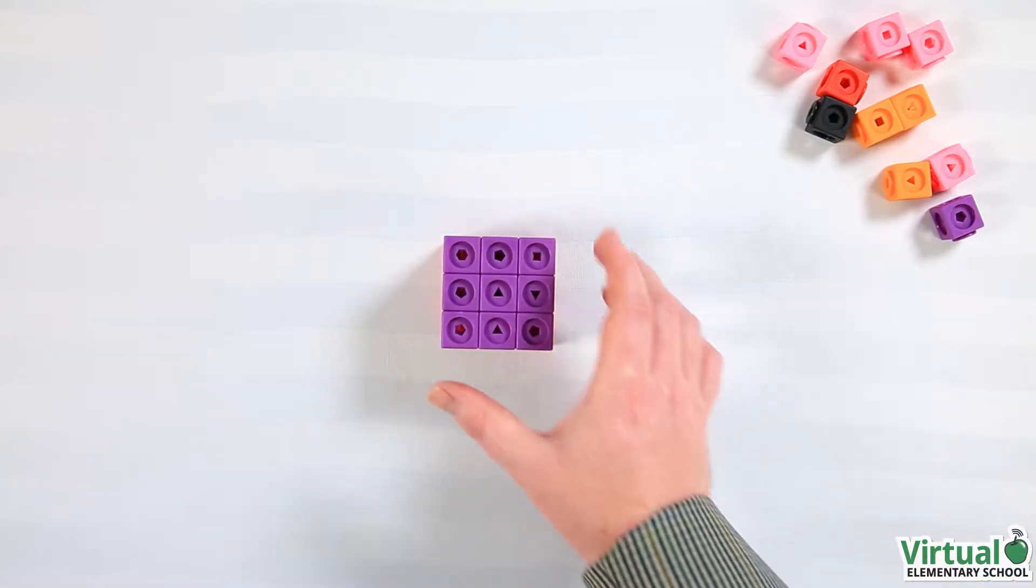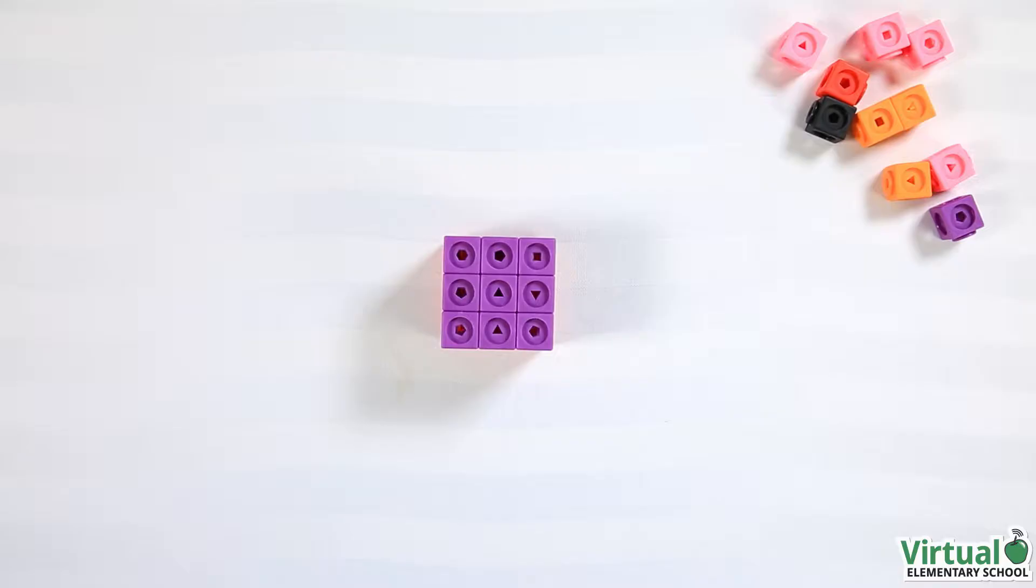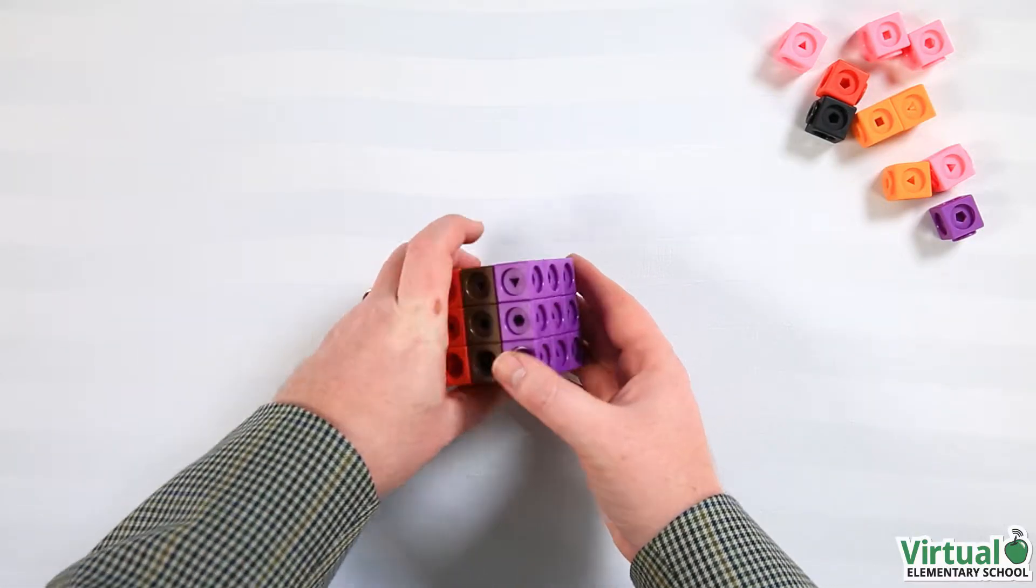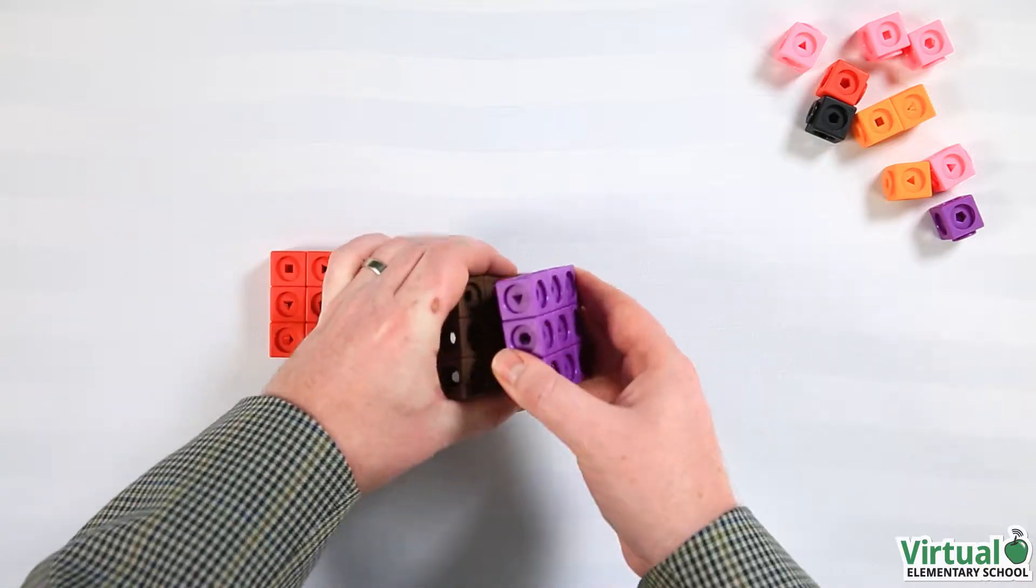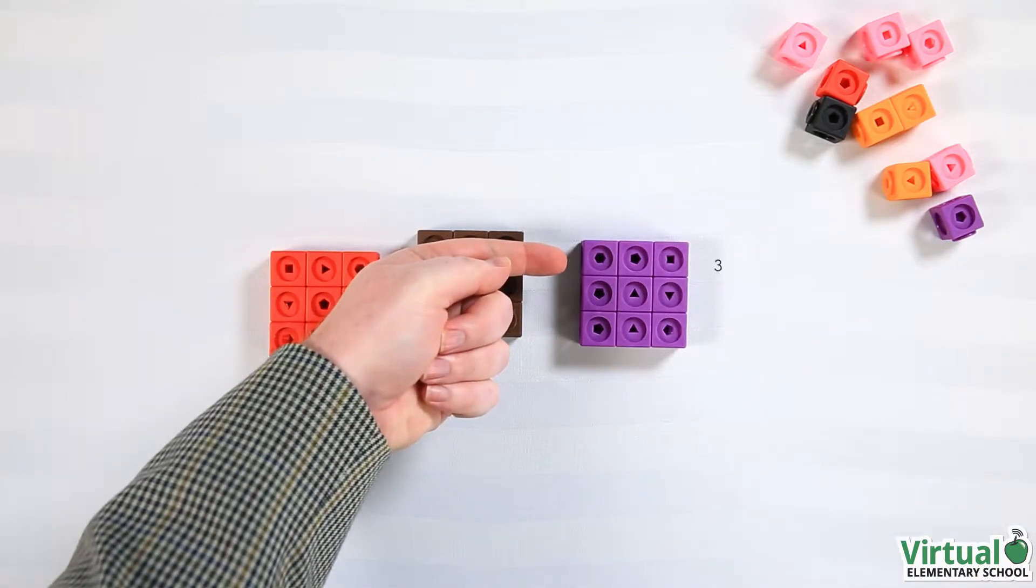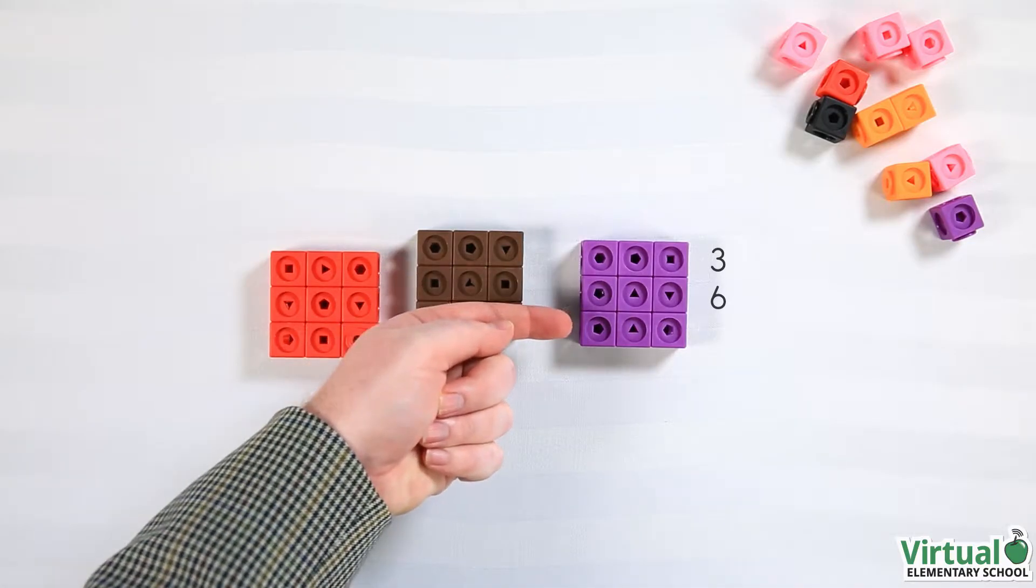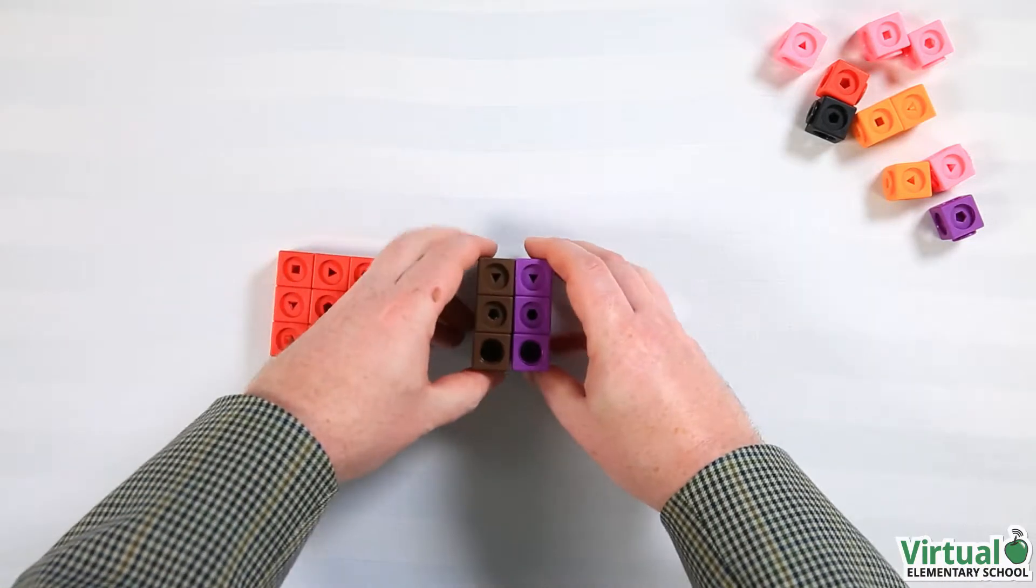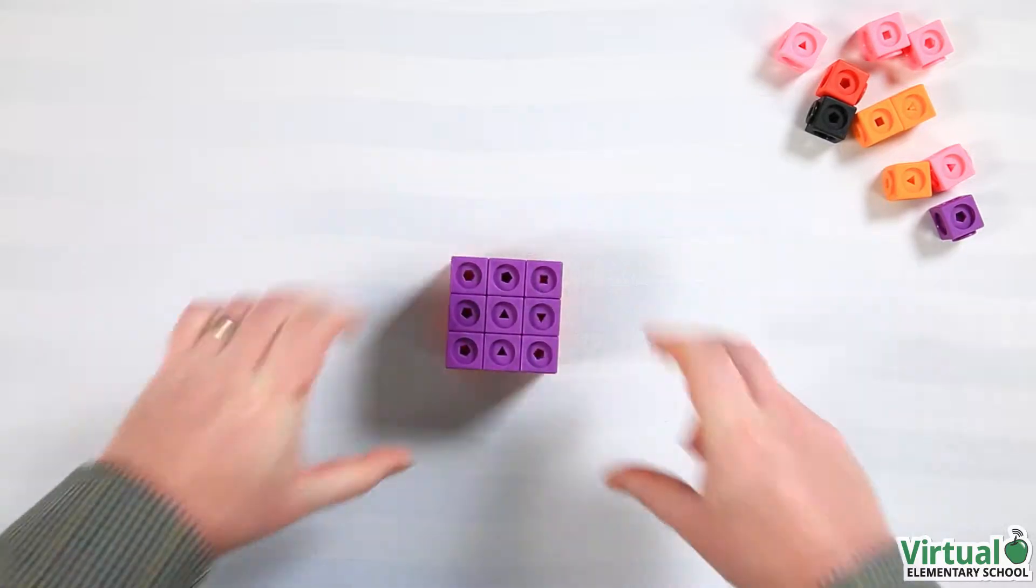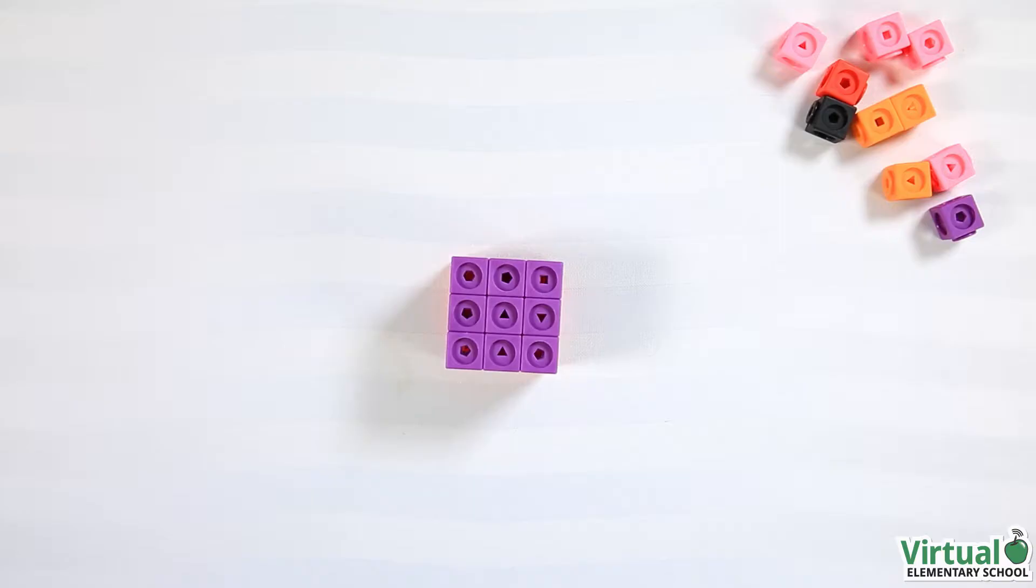Let's measure the volume of this large cube. Notice that it has three layers of connecting cubes. The top layer has three, six, nine cubes. The three layers fit exactly on top of each other. This means they have the same number of cubes.